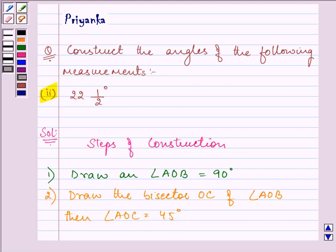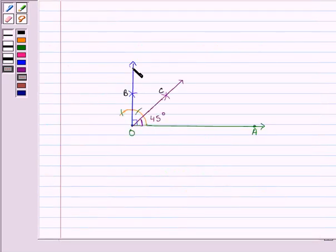So the required first construction was to draw an angle of AOB equal to 90 degrees and then to draw the bisector OC of this angle AOB to form an angle AOC that is equal to 45 degrees.